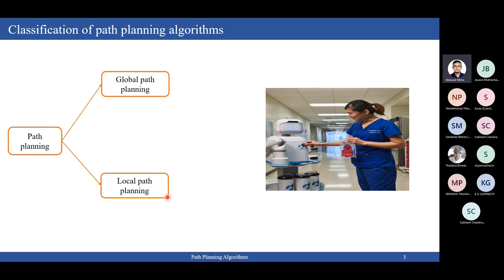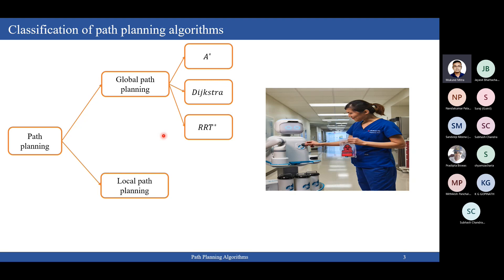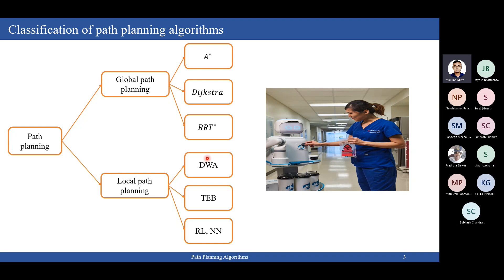Global path planning algorithms include A*, Dijkstra, RRT*, and RRT. Local path planning includes DWA (dynamic window approach), DEB, and now reinforcement learning (RL) and neural networks (NN). These technologies have come into account and I will explain why these are coming and what their uses are in coming slides.